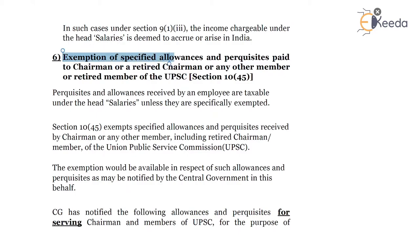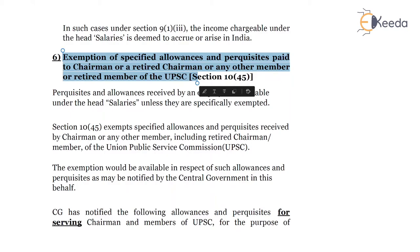Moving on to the next exemption — exemption of specified allowances and perquisites paid to chairman or retired chairman, or any other member or retired member of the UPSC (Union Public Service Commission). There are four components: chairman in service, chairman retired, member in service, and member retired. There are different provisions for retired personnel and personnel who are in service.